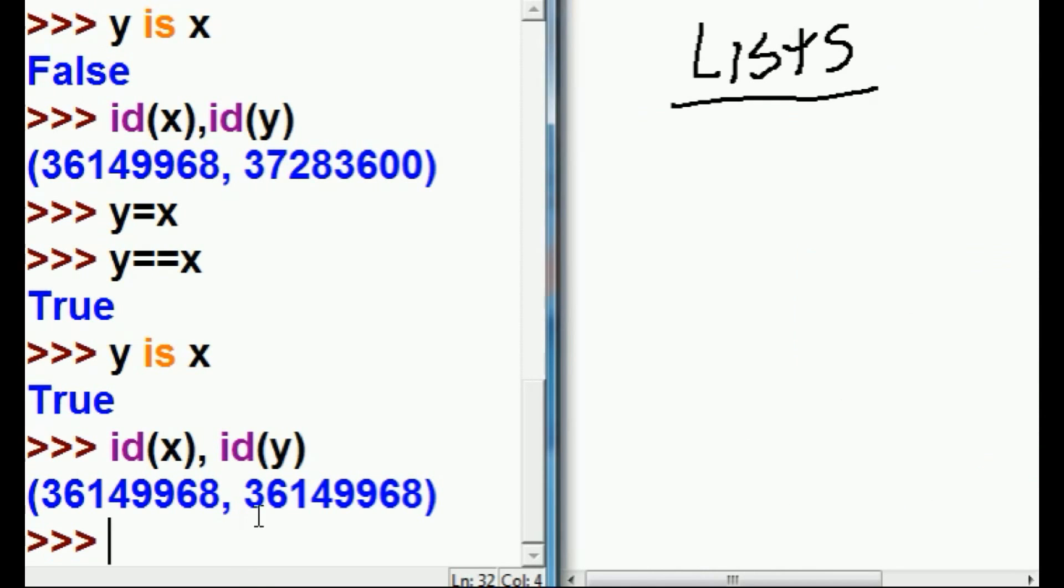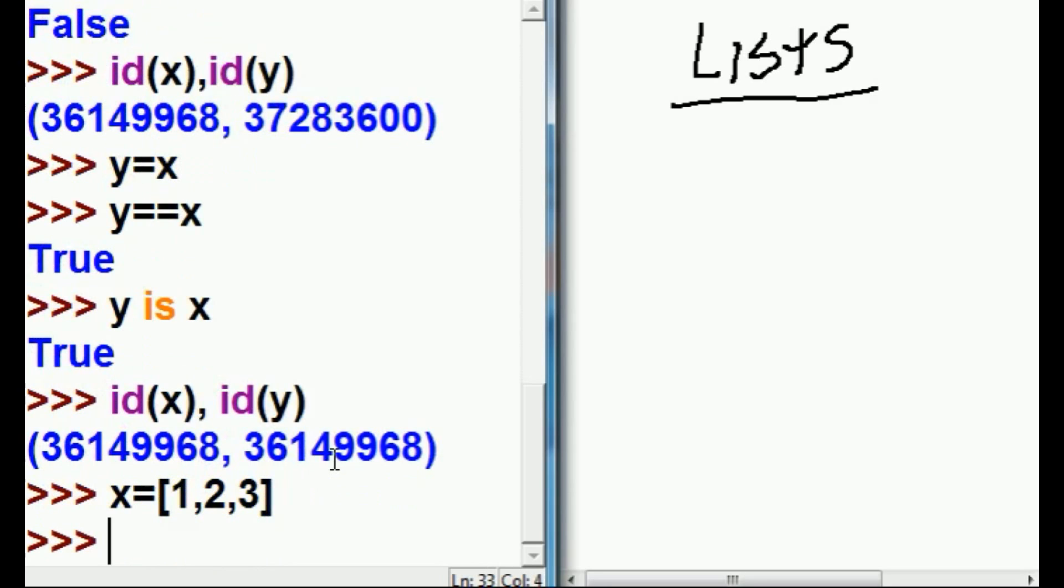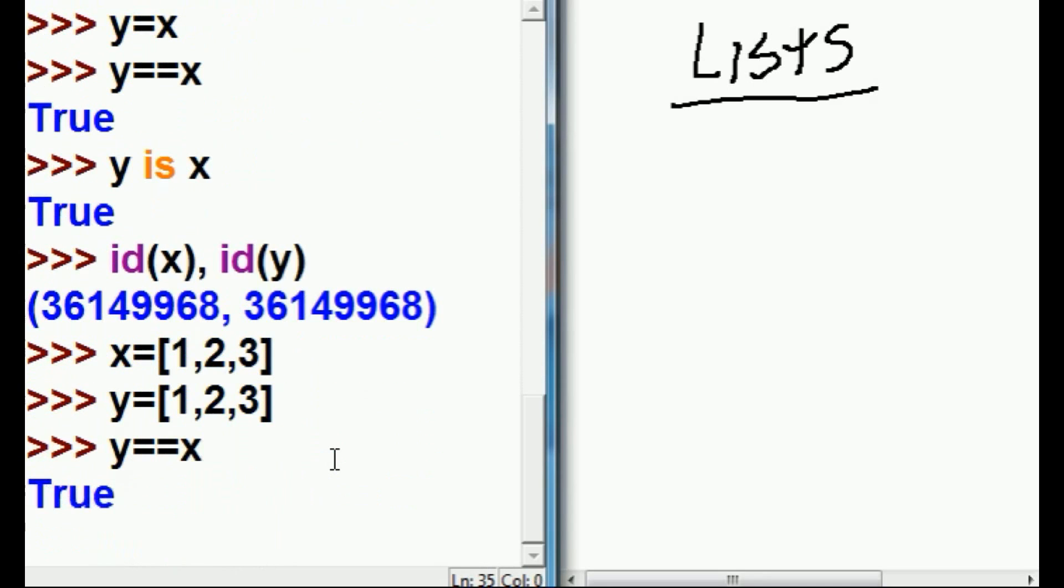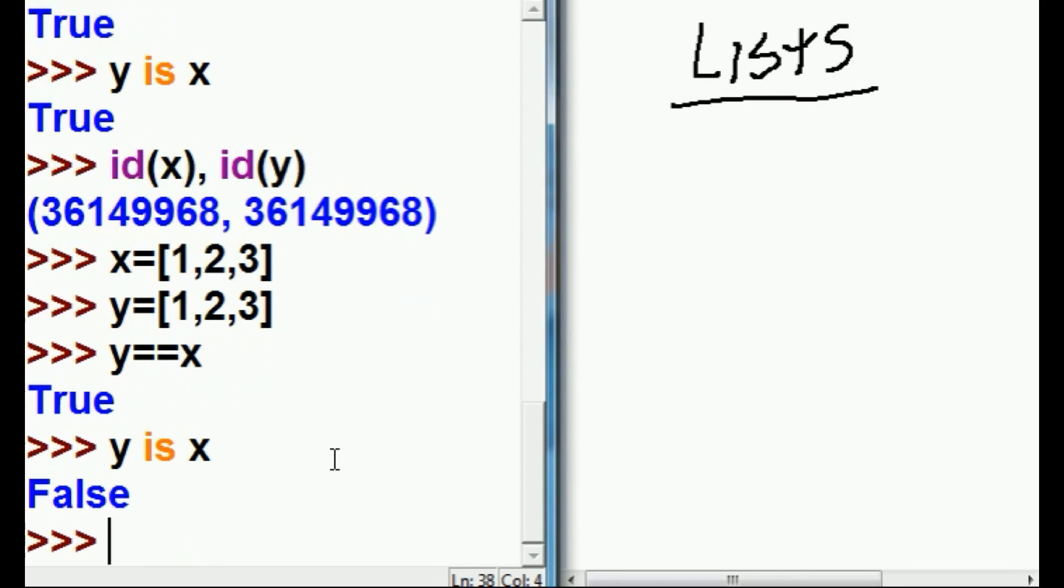Is this also true for lists? Let's find out. So, let's use my favorite example. x equals [1,2,3], and y equals [1,2,3]. y equal equal x? True. y is x? False. They're pointing to separate areas in memory.